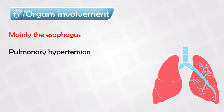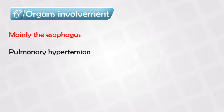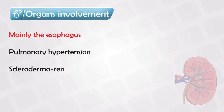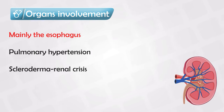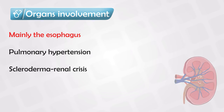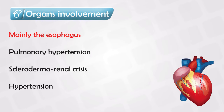If the pulmonary system is involved, we expect the patient to have pulmonary hypertension with interstitial fibrosis. The kidneys can also be involved, and this is known as scleroderma renal crisis. The cardiovascular system will also be involved, and the patient might present with hypertension.